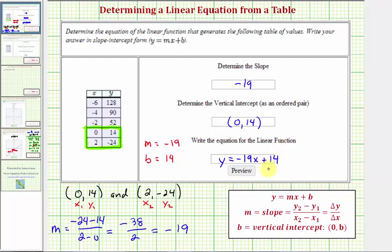Notice for this example, we were fortunate because the vertical intercept was in our table of values. In our next example, it won't be, so we'll have some extra work. I hope you found this helpful.